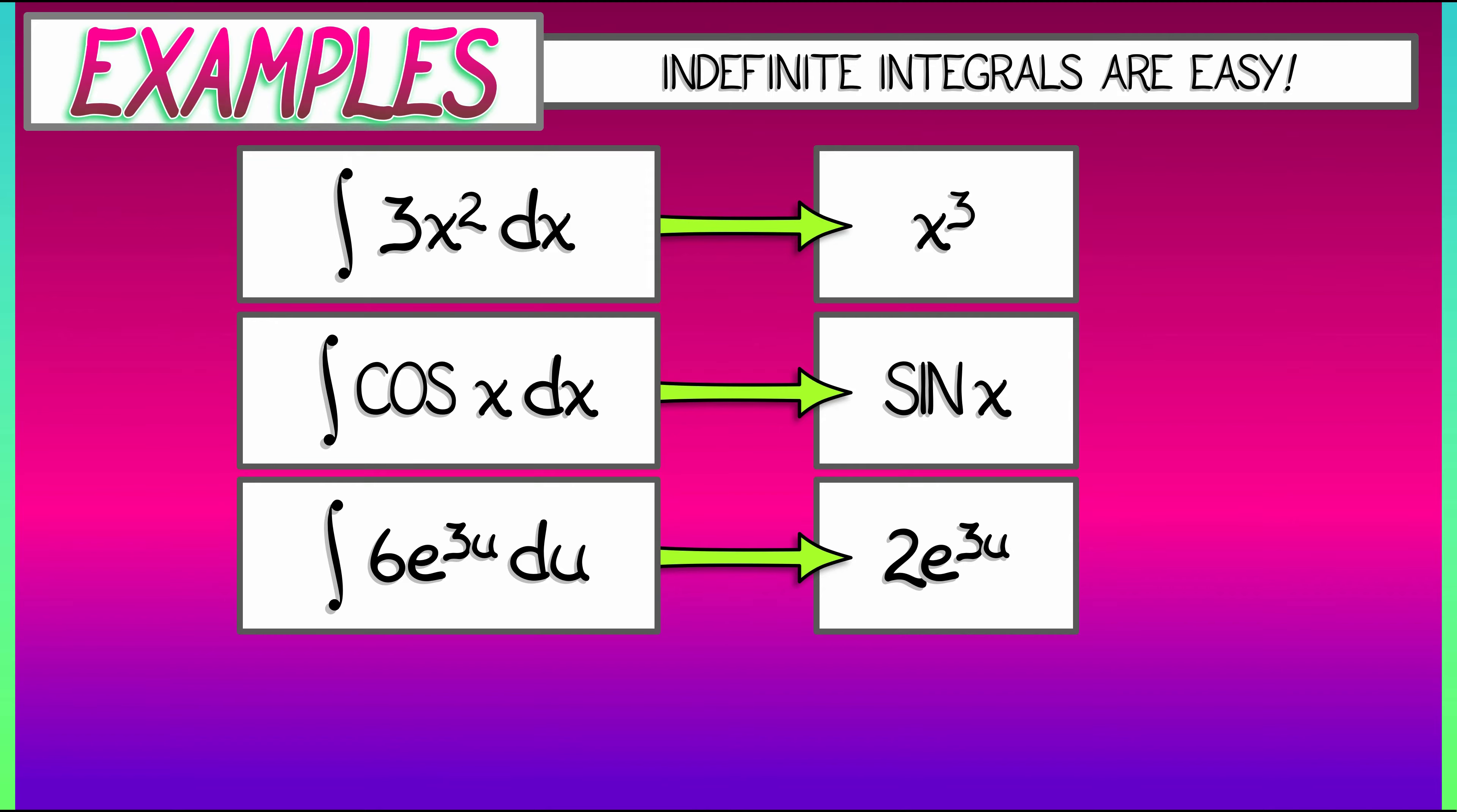Is that the answer? Well, let's check. What's the derivative of 2e to the 3u? 2 times 3, 6e to the 3u. So yes, that's it. That works fine. And we can keep going with many such examples.